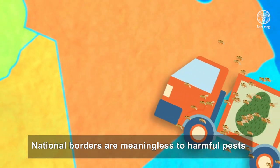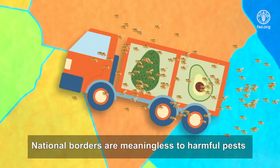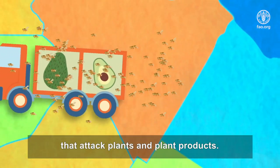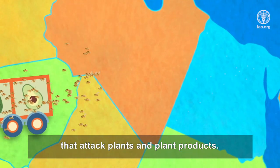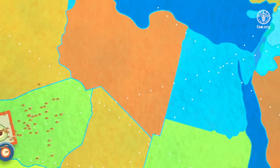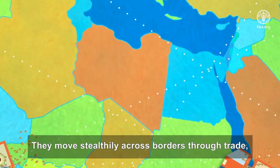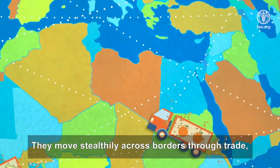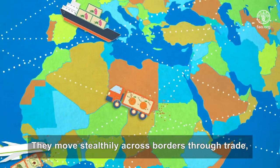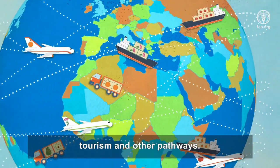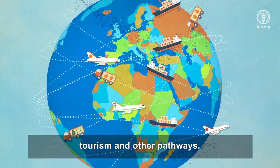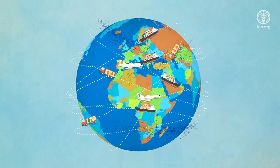National borders are meaningless to harmful pests that attack plants and plant products. They move stealthily across borders through trade, tourism and other pathways.